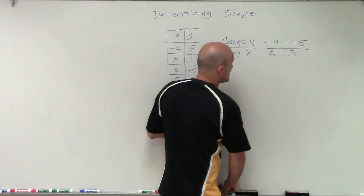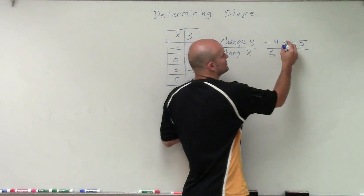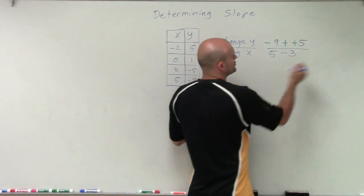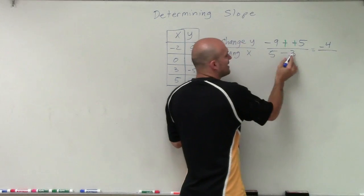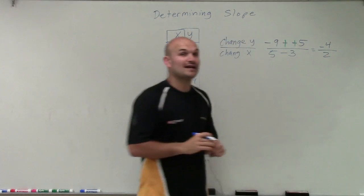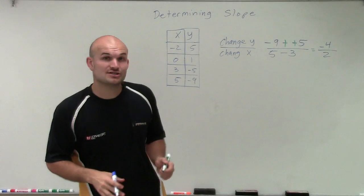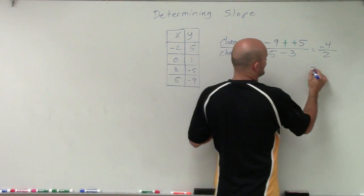So what I notice here is I have a negative 9 minus a negative 5. That's going to produce a double negative, which will give me negative 4. And then I have 5 minus 3, which is a positive 2. Negative 4 divided by 2 equals negative 2.